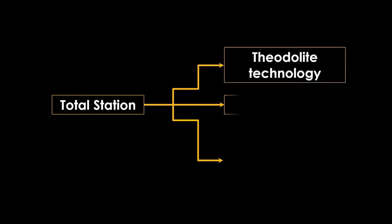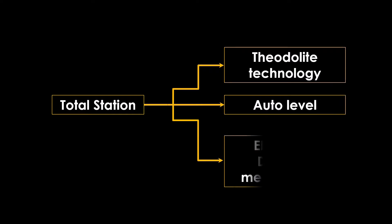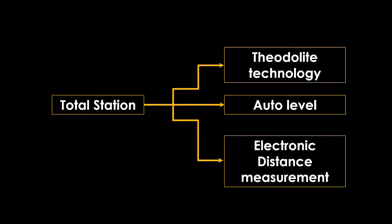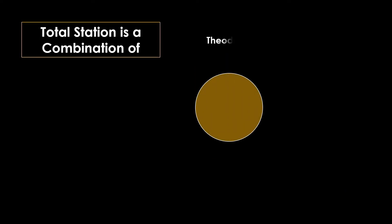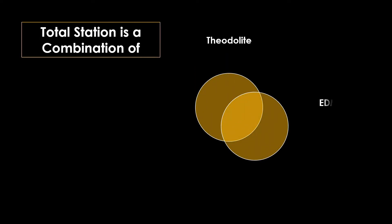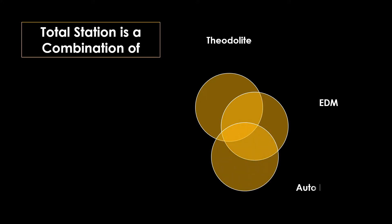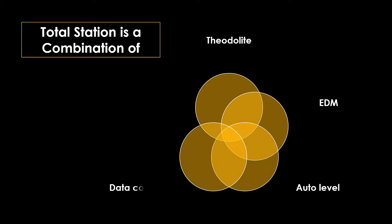Total stations are a combination of theodolite technology with that of auto level and electronic distance measurement (EDM). The major difference is in its ability to gather data electronically, which can be imported to a computer. Hence, total station acts as a substitute for theodolite, electronic distance measurement, auto level, data collector, and a microprocessor.